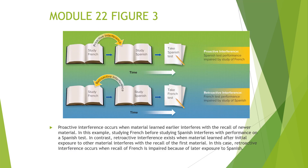Figure 3 at the top of page 229 illustrates these concepts. With proactive interference: you first study French, then study Spanish, and when you take your Spanish test, the previously learned French disrupts your recall. With retroactive interference: you study French, then study Spanish, and when you take a French test, studying Spanish disrupted your recall of French. One disrupts what you learned second; the other disrupts what you learned first.